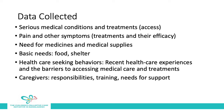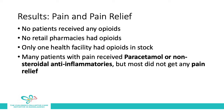I'll highlight a few key findings from our needs assessment. On pain and pain relief: we didn't find any patients who received opioids. There were no retail pharmacies that stocked opioids, and only one health facility in the whole region had opioids in stock. Many patients with pain received paracetamol or non-steroidal anti-inflammatories, but most reported that these medicines did not give them any pain relief.